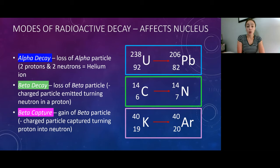I'm going to be talking about three main processes of radioactive decay. Alpha decay, beta decay, and beta capture. Alpha decay can be shown by the example of uranium-238, which decays into lead-206. Alpha decay happens by loss of an alpha particle, which is just two protons and two neutrons, or as we like to call it, helium, just because anything with two protons by definition is helium.